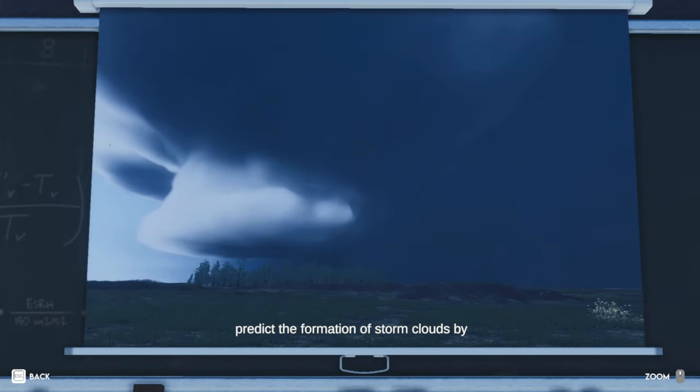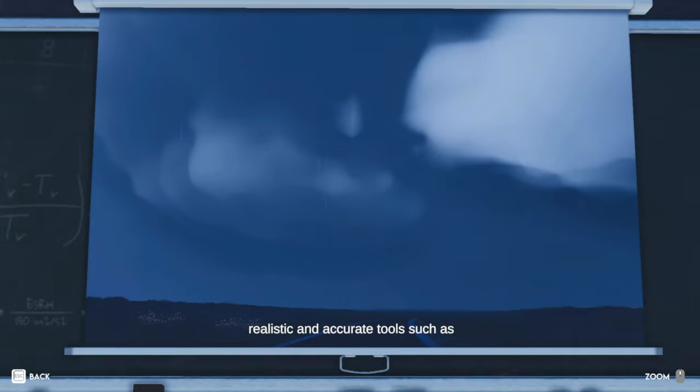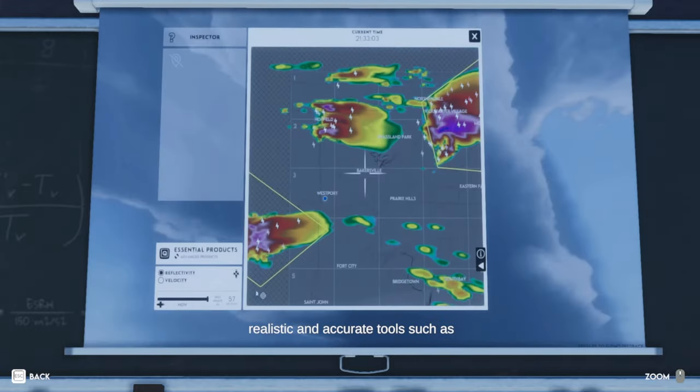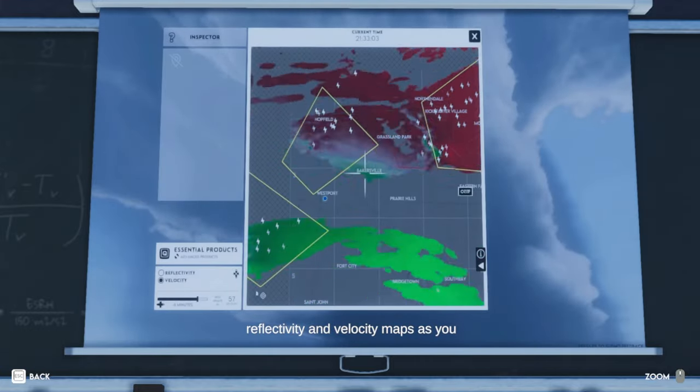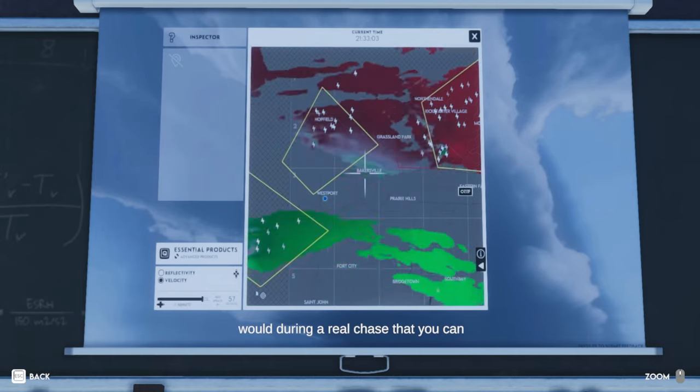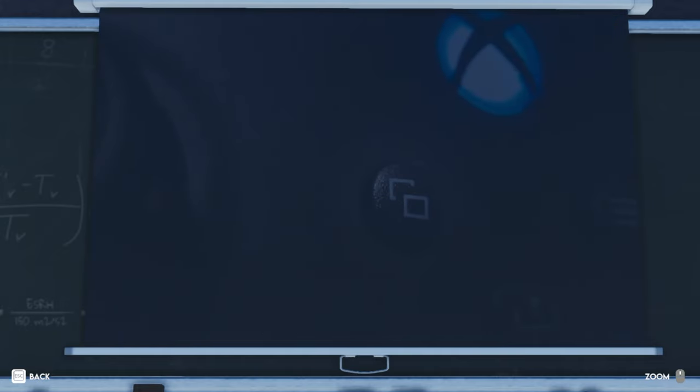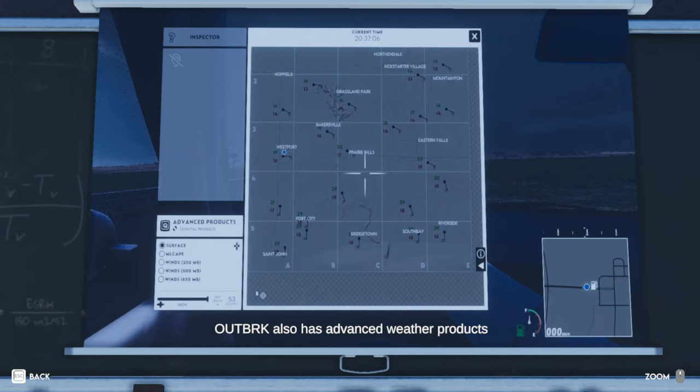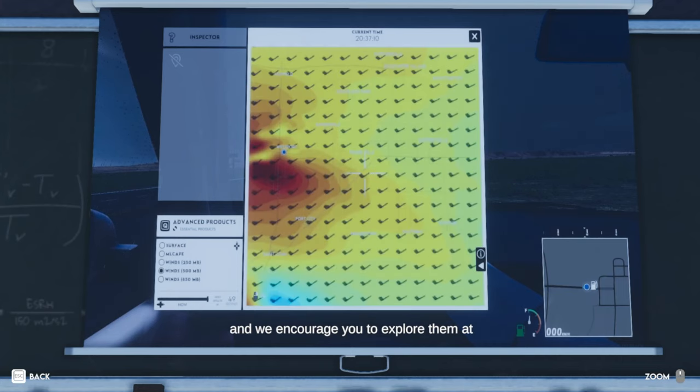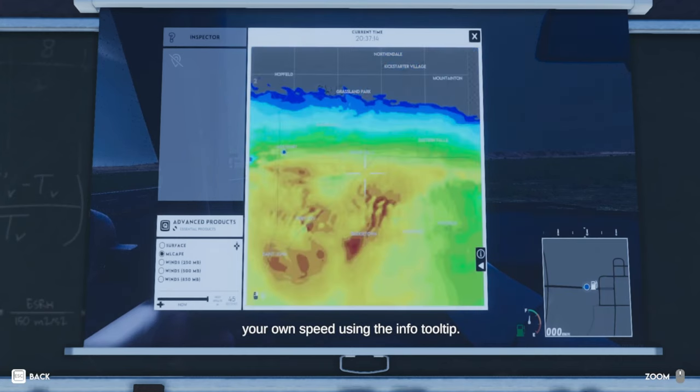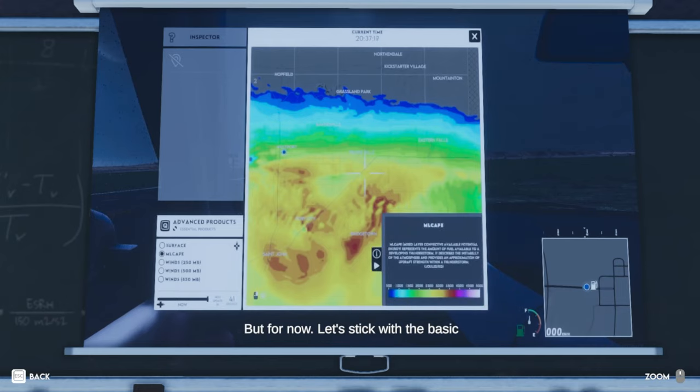You can observe and predict the formation of storm clouds by how they behave in the sky, or use realistic and accurate tools such as reflectivity and velocity maps as you would during a real chase that you can access in the game using, well, a button on your keyboard or on your controller, I guess. Outbreak also has advanced weather products and we encourage you to explore them at your own speed using the info tooltip, but for now, let's stick with the basic products.